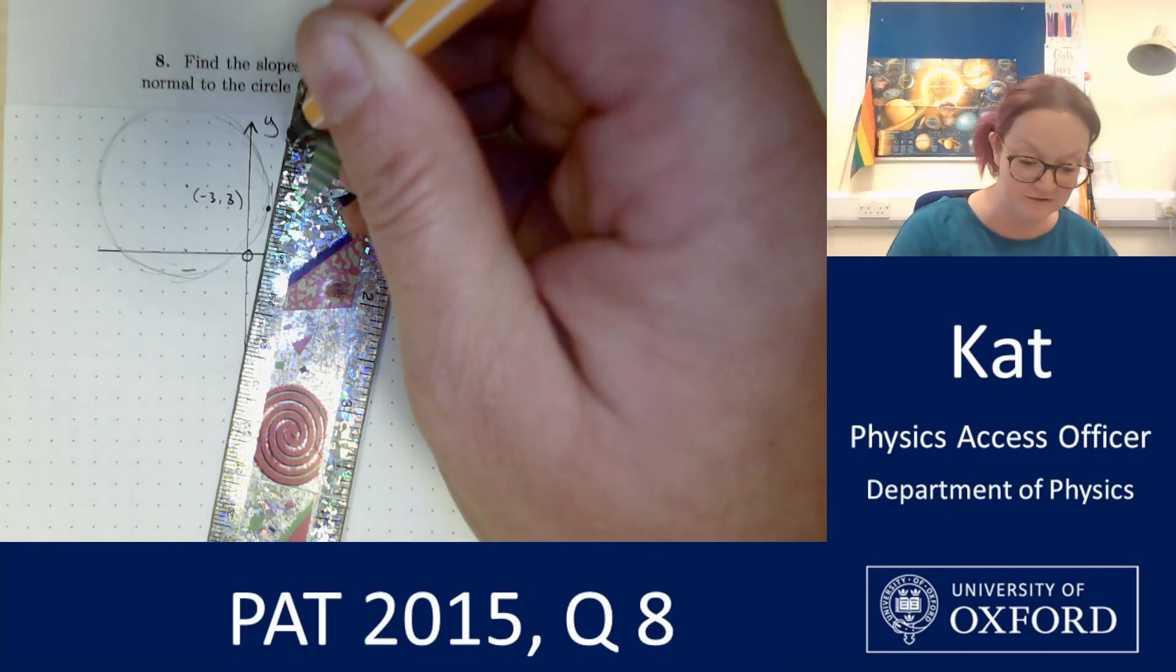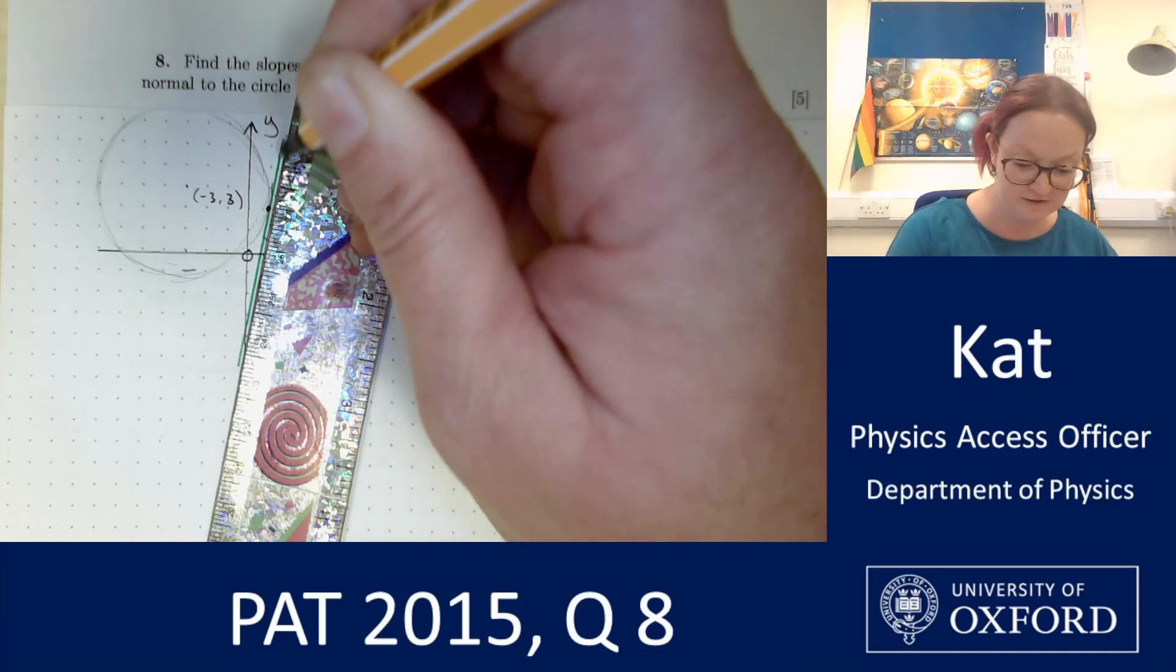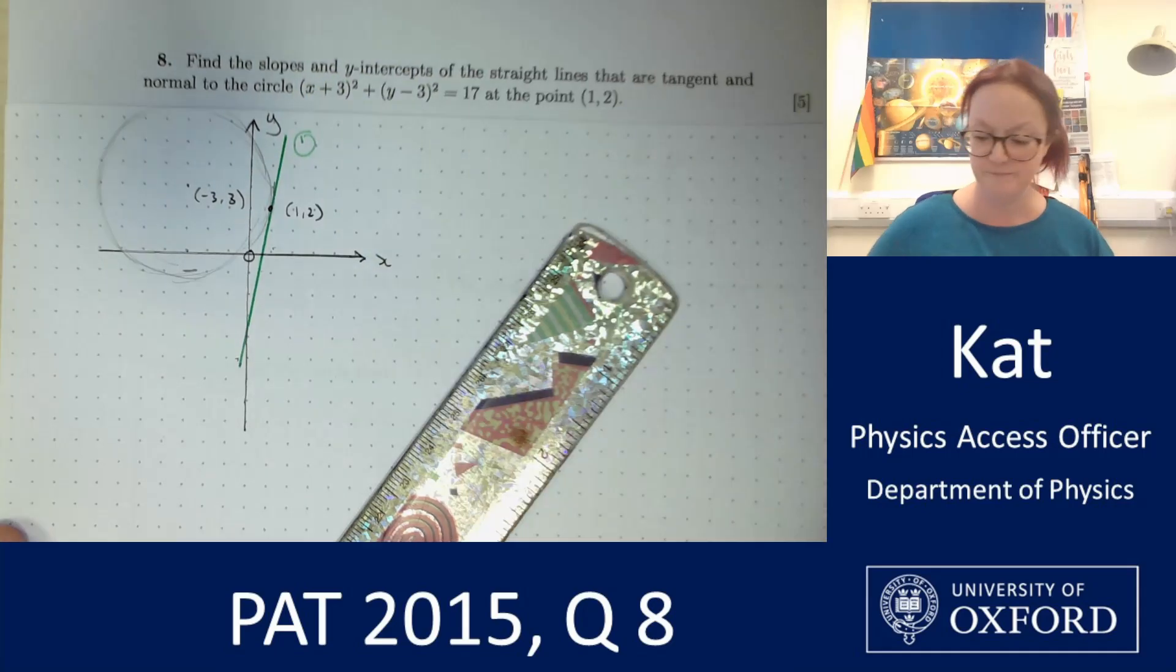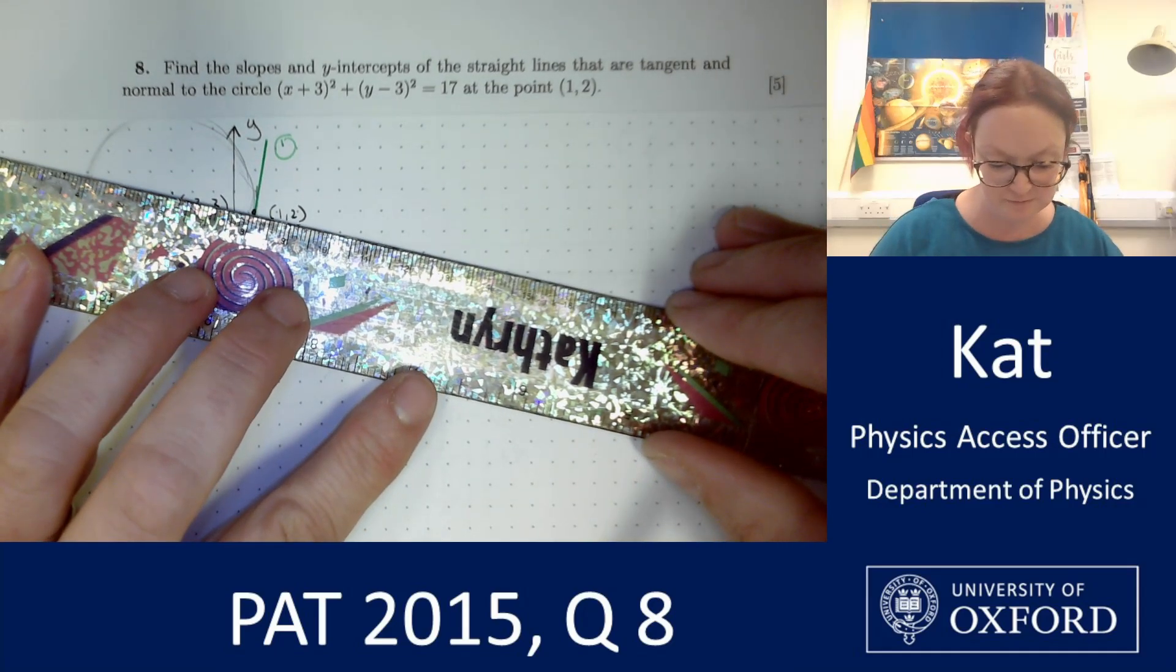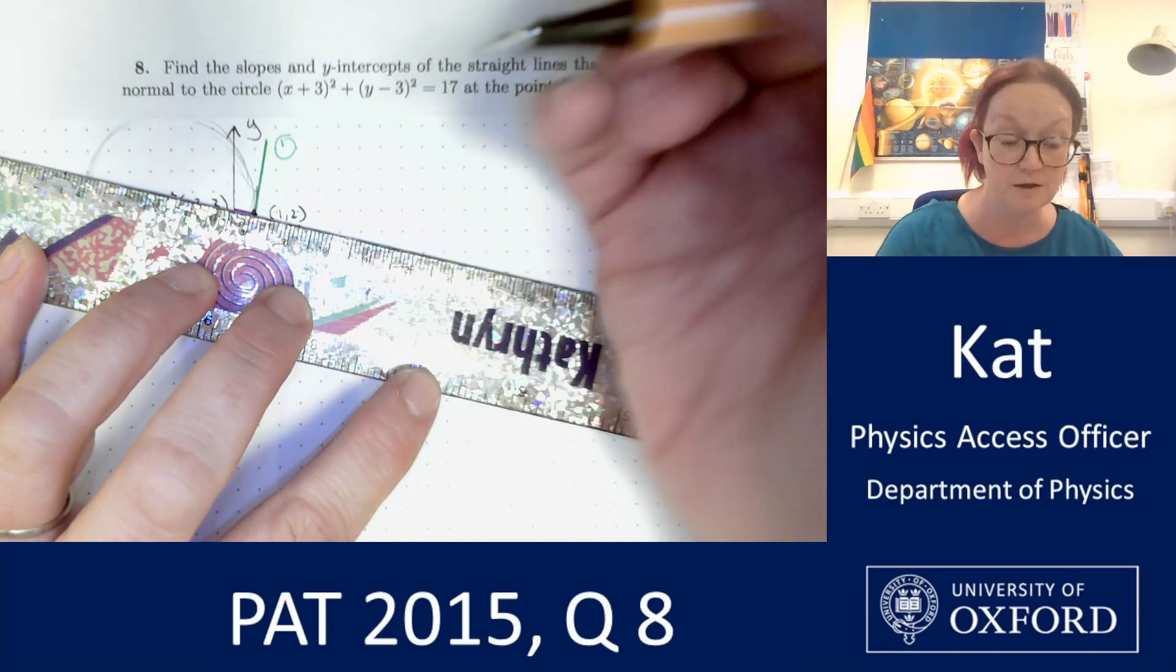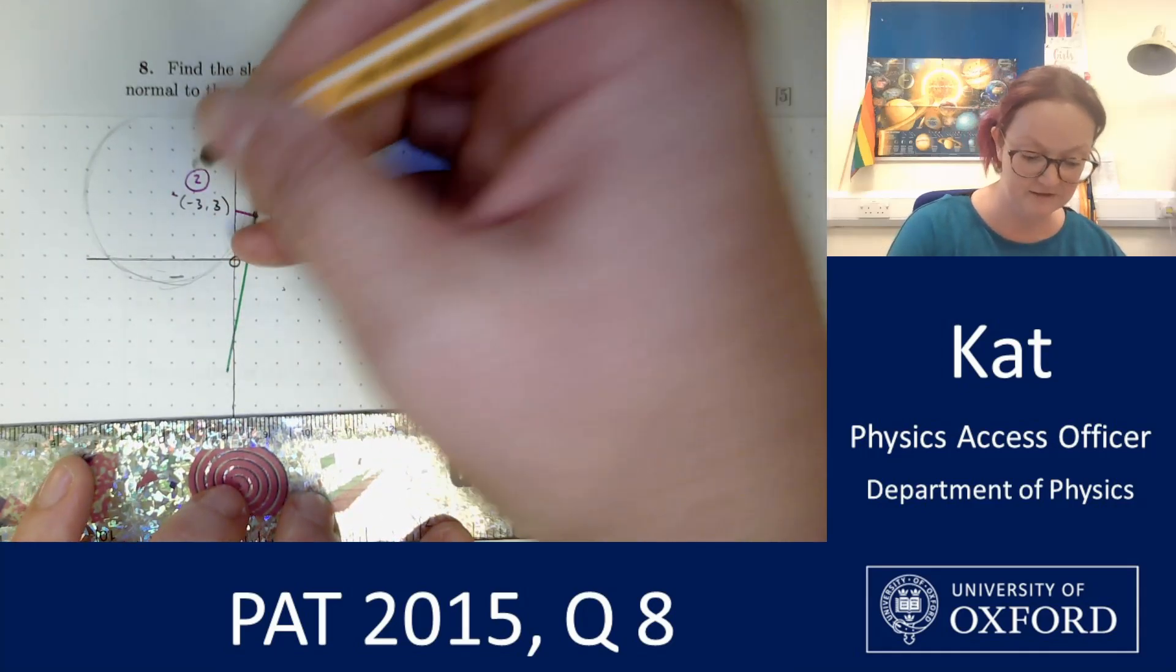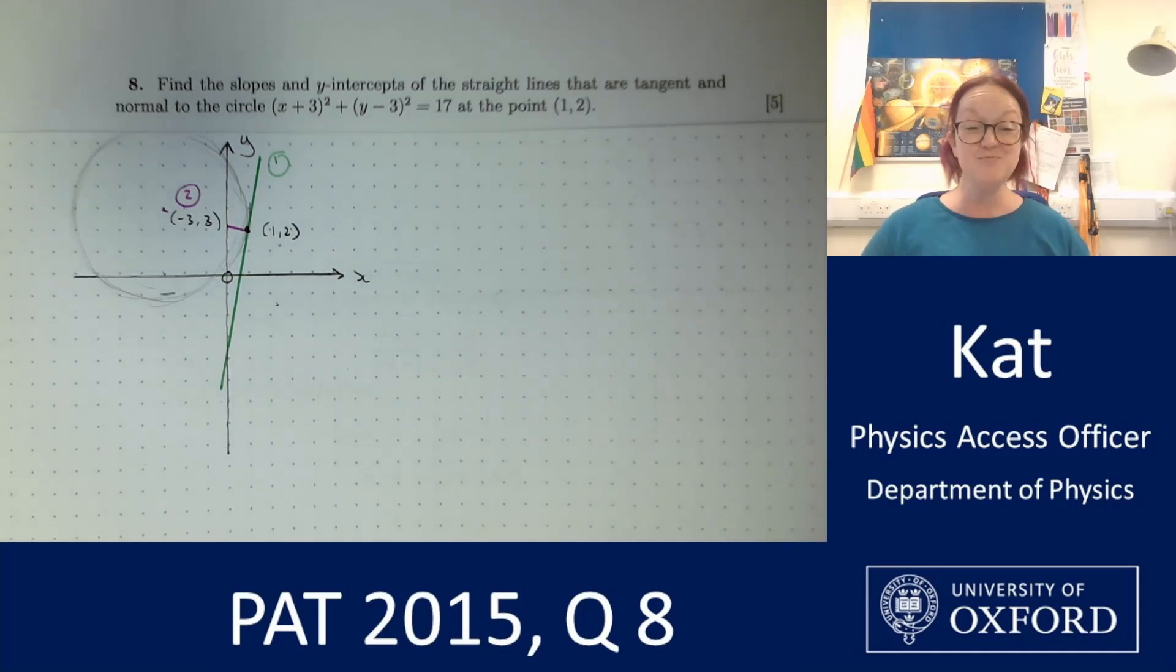I'm going to use two different colours. I'm going to draw in my tangent to my circle in green and I think I'll label that as line 1. And I'm going to sketch in my normal to my circle, so the line from the centre of the circle out to that point in pink and call it line 2. And from there on in, it's really straightforward.